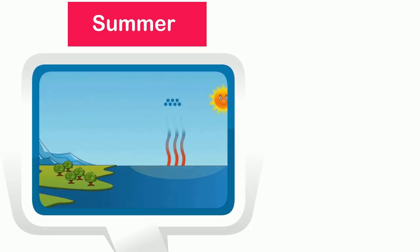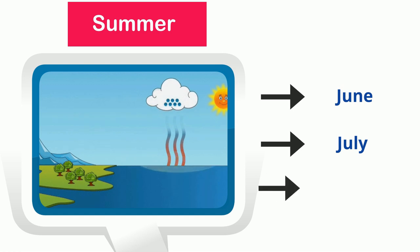Summer: in summer the weather is sunny and warm, and it stays in the months of June, July, and August.